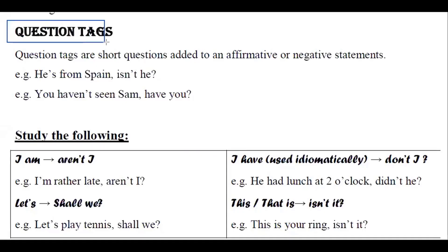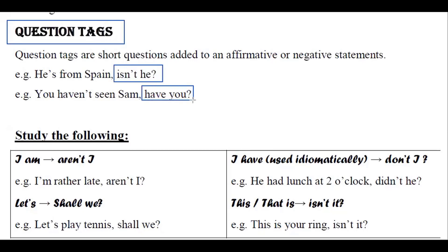Question tags are short questions added to an affirmative or negative statement. For example: 'He is from Spain, isn't he?' or 'You haven't seen Sam, have you?' Pay attention that if the sentence is affirmative, the question tag is negative, and vice versa.